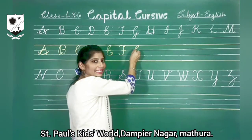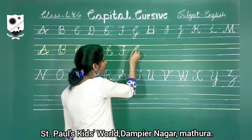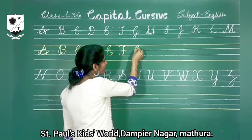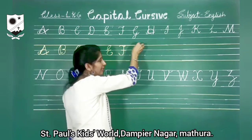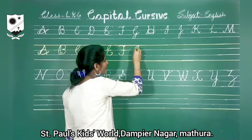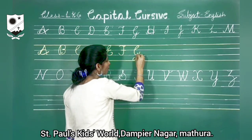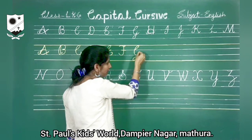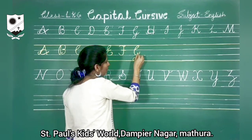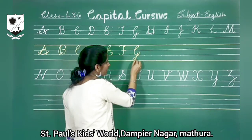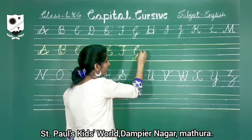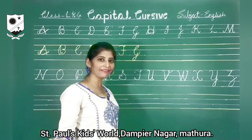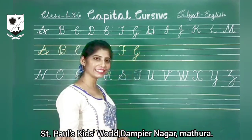Once again look here. We will start from the second line. We will go up towards the first line. Make a loop. Come back towards the third line. Little bit go up. Come back towards the fourth line. Make a loop. And then leave it. Capital G.